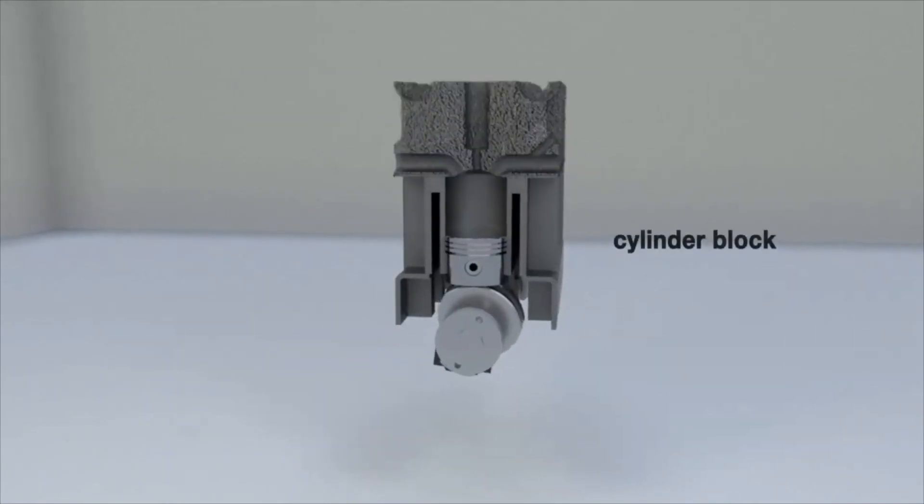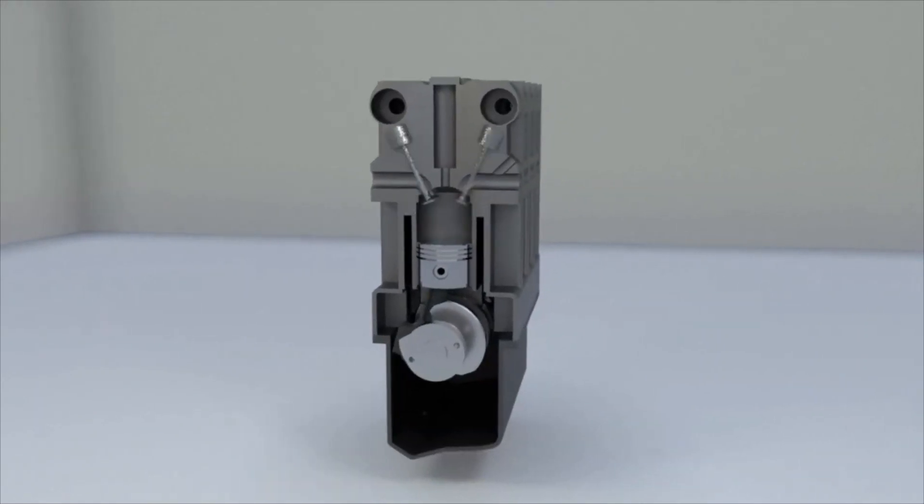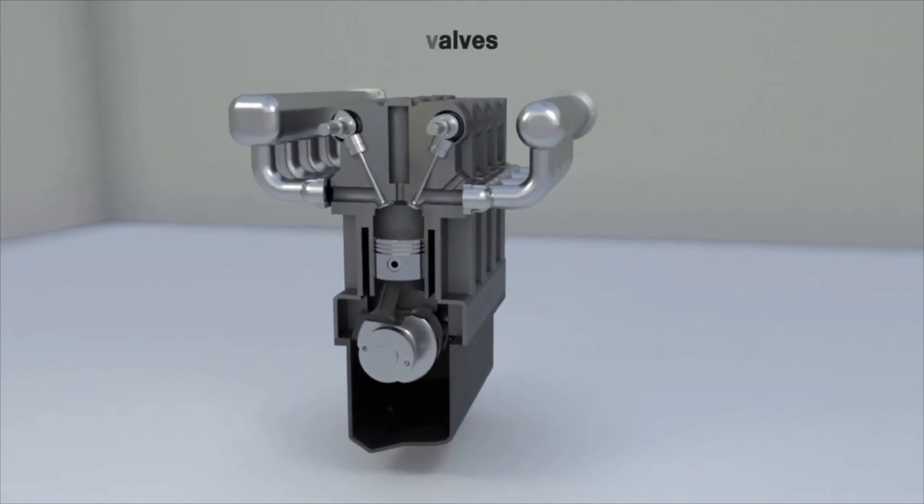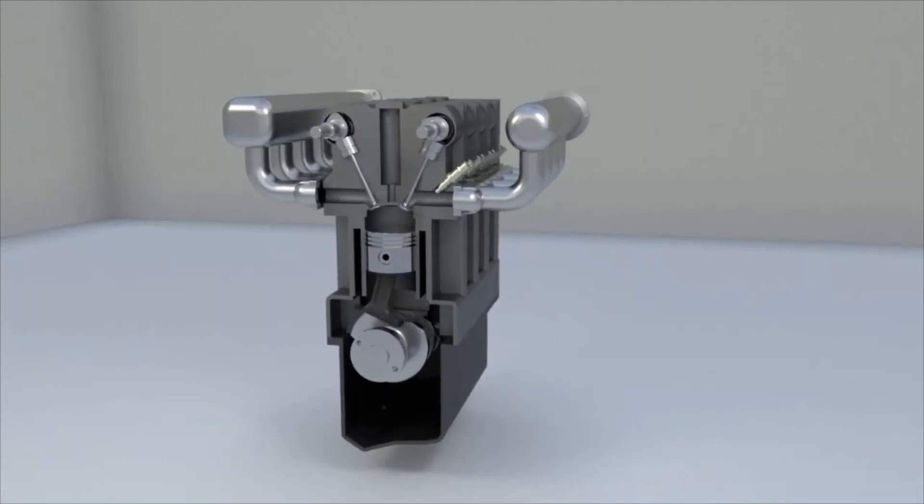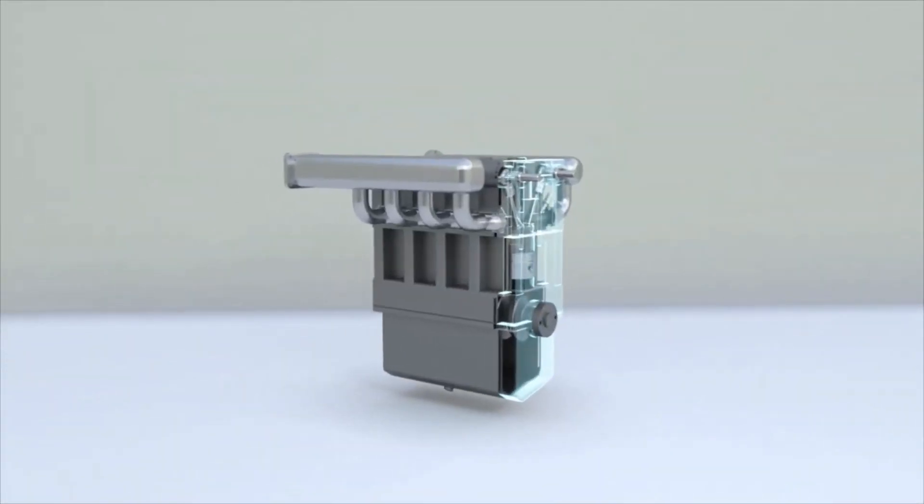Valves are installed in the lid, allowing to connect the chamber to the intake or exhaust manifold. The gas distribution mechanism is responsible for opening the valves. The fuel is delivered to the working chamber through the nozzle. The candle provides a spark to ignite the mixture.